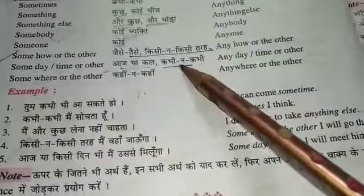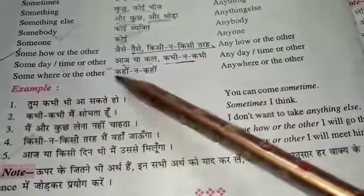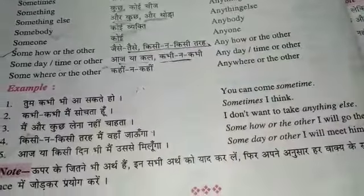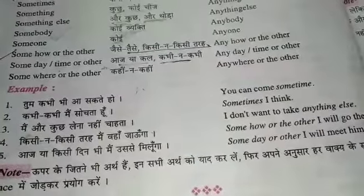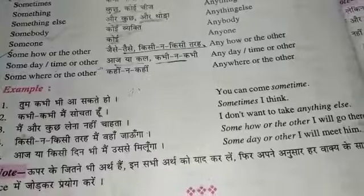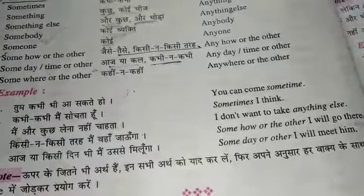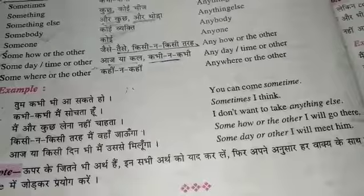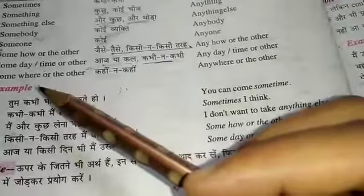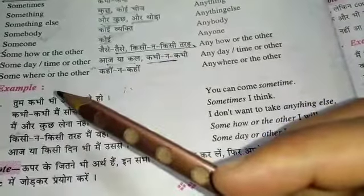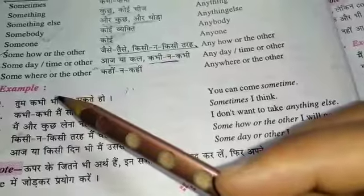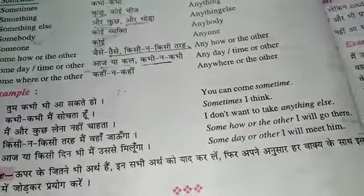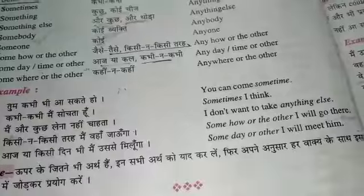Somewhere or the other — somewhere or the other I will go. Kabhi na kabhi mein jaunga. Or we can say: somewhere or the other she is telling a lie. Kabhi na kabhi wo jhoot bol rahi hai.